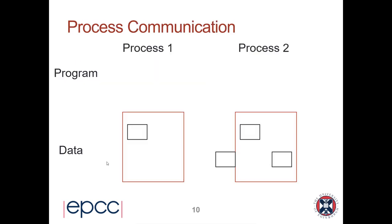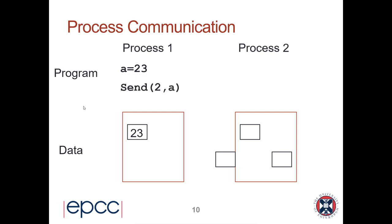Here's a little diagram to illustrate how process communication works in practice. We've got process one with its memory and data, and process two with its memory and data. Think of process one running on my laptop here in Edinburgh and process two running on my collaborator's laptop in Australia. I want to send some data from Edinburgh to Australia. My program says something like a equals 23, setting variable a to 23 in my memory space. I now want to transfer that data to process two, and I do so by calling a send function.